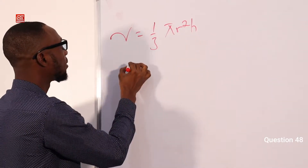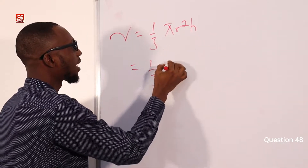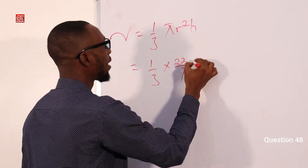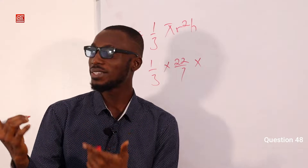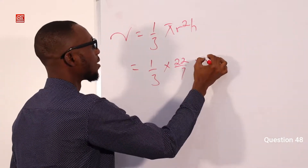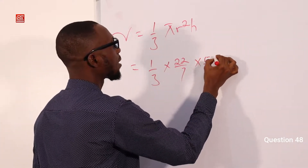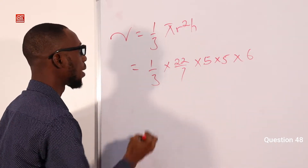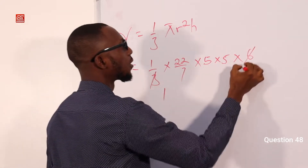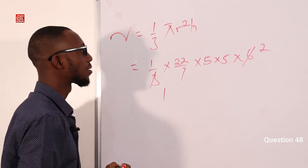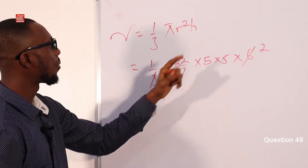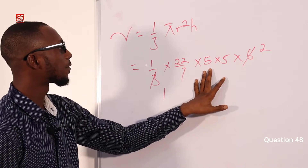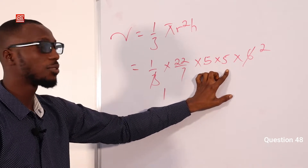We are given: we can take our pi as 22 over 7. We are given our base radius as 5 cm and the height as 6. So that is 5 times 5 times 6. We have 3 here and 3 here. At the numerator, 5 times 5 is 25.